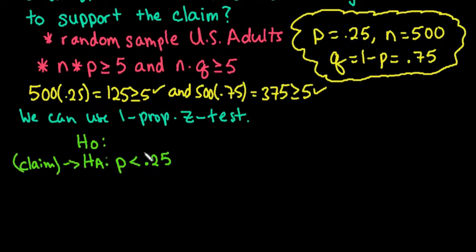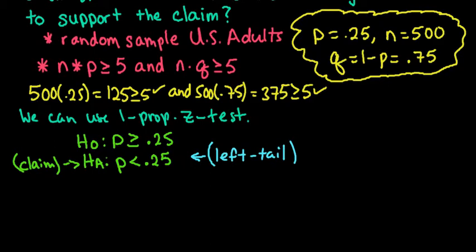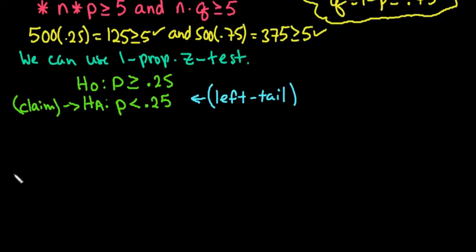All right, so this is our claim. And I always write that because when it comes to the interpretation, it's important to understand where your claim is. And then the null always has to have equality, and it's the complement of the alternative. When we get to it, we will shade the left tail. But like I said, I'm going to do this in the calculator in order to get the results, and that will show us how to shade our P value, which is different than the P in the null and the alternative.